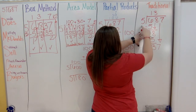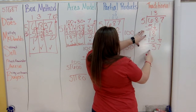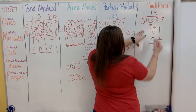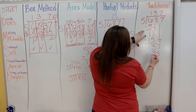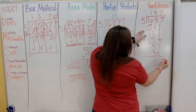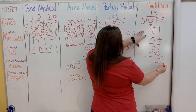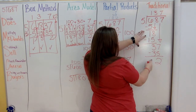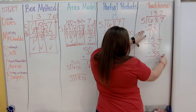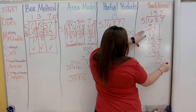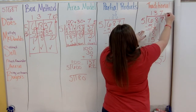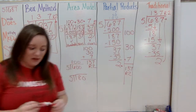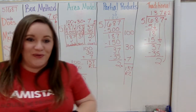How many times can 5 go into 37? Seven times. 5 times 7 is 35. Subtract: 2 left over. Is 2 smaller than 5? Yes — but there's no other number to bring down, so this remainder comes up top and becomes remainder 2.